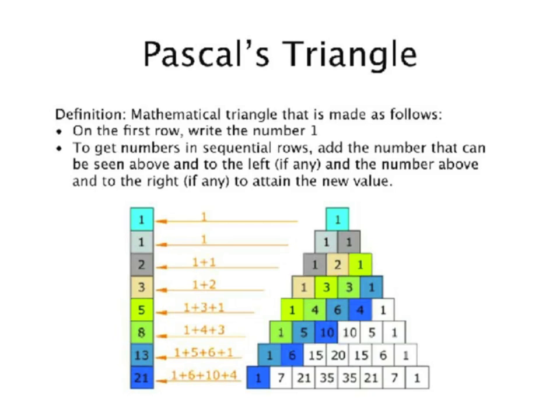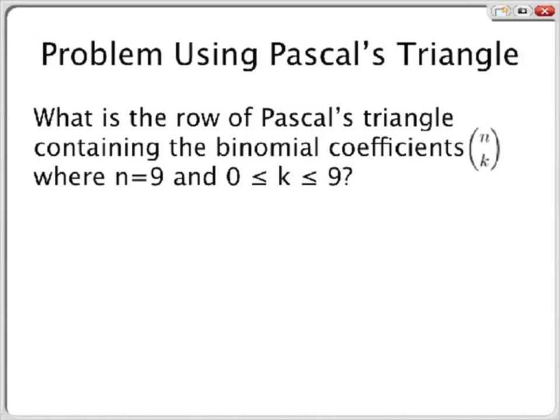You can also see the addition of these rows can be connected to the Fibonacci sequence, shown on the left. We will continue with a simple problem involving Pascal's Triangle. The problem states: what is the row of Pascal's Triangle containing the binomial coefficients n choose k, where n is equal to 9 and k is between 0 and 9 inclusive?